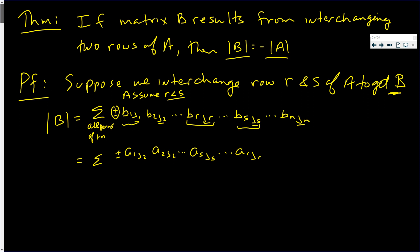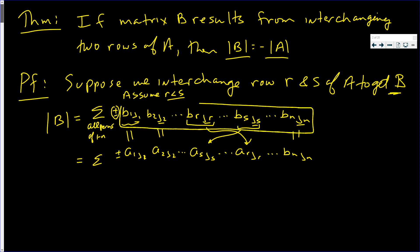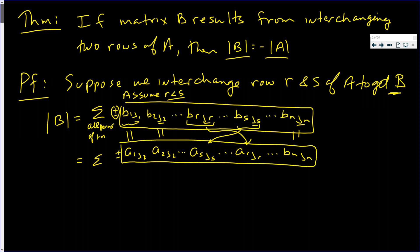We get ARJR all the way down to BNJN. If you notice, these pairs of entries are equal — those are equal, those are equal, those are equal. That is, this product of N numbers is clearly the same as this product of N numbers. But do we use plus or minus? That comes from the number of inversions.